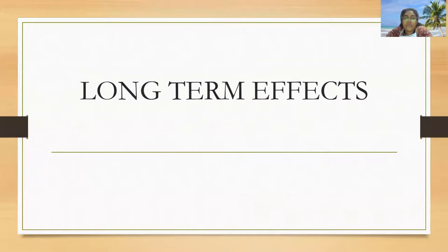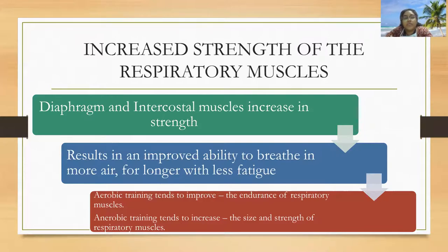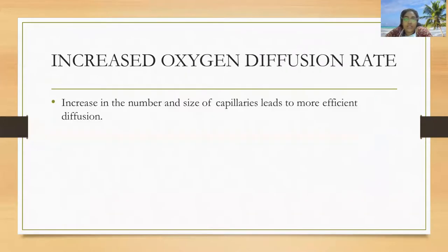Moving to the long-term effects, which cause mostly anatomical changes: there is an increased strength of the respiratory muscles, where the diaphragm and intercostal muscles increase in strength, resulting in an improved ability to breathe in more air for longer with less fatigue. Aerobic training tends to improve the endurance of respiratory muscles, while anaerobic training tends to increase the size and strength of the respiratory muscles. Long-term training also increases the oxygen diffusion rate by increasing the number and size of the capillaries, leading to more efficient diffusion.